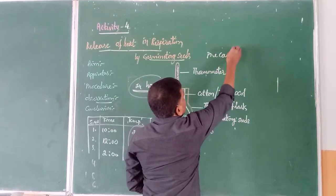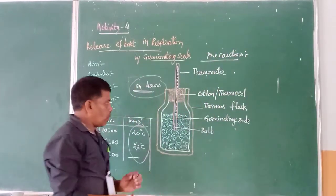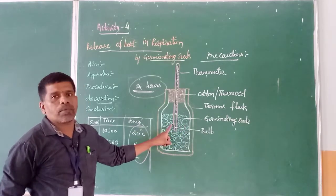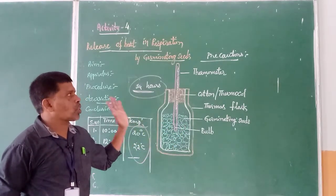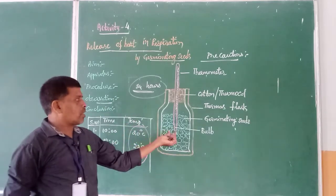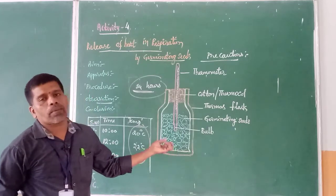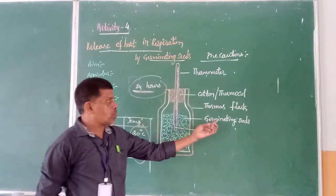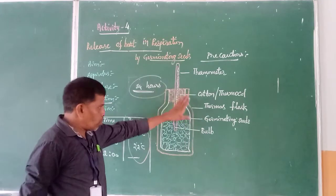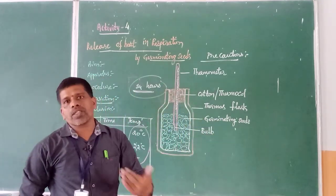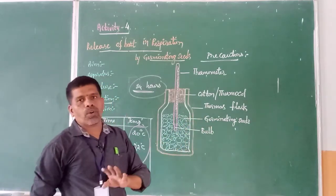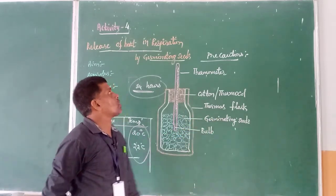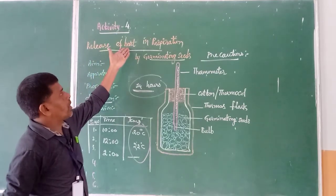Finally, write the precautions. Precaution one: care to be taken that the bulb of the thermometer should be inserted between the germinating seeds. Precaution two: see that the bulb of the thermometer does not touch the bottom of the thermos flask. Also, to make a comparison, take one more setup of the same type but instead of germinating seeds use normal seeds — you will see that there will be no rise in temperature. This confirms it is done specifically by the germinating seeds. This completes Activity 4: release of heat in respiration by germinating seeds.